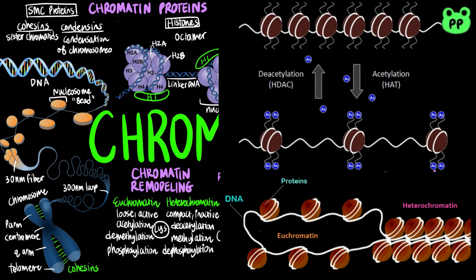In histone acetylation, acetyl groups are attached to positively charged lysines in histone tails, which loosens chromatin structure, thereby promoting the initiation of transcription. Whereas deacetylation of lysine tails promotes heterochromatin structure, which is unavailable for transcription.